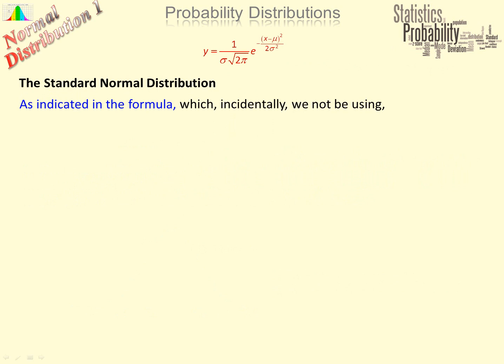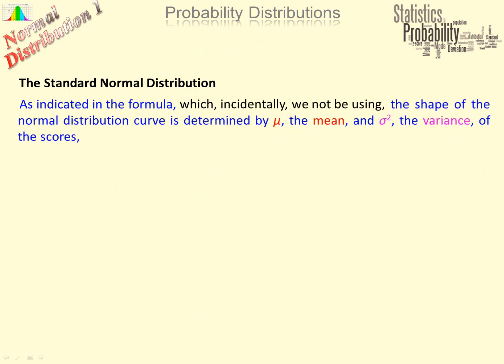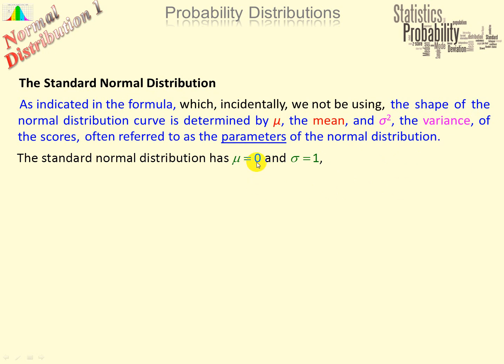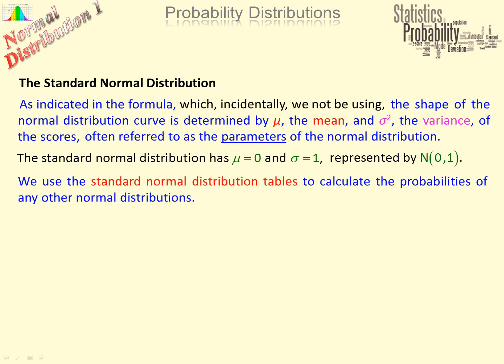Now we are going to look at the standard normal distribution. As indicated in the formula — which incidentally we will not be using — the shape of the curve is determined by mu, the mean, and sigma squared, the variance of the scores, often referred to as the parameters of the normal distribution. The standard normal distribution has mean zero and standard deviation one, represented by N(0,1). We have standard normal distribution tables — the Z table — to calculate the probabilities of any other normal distribution.